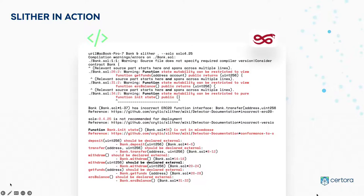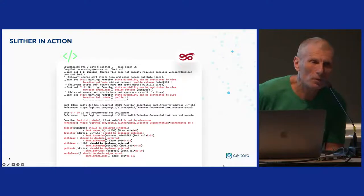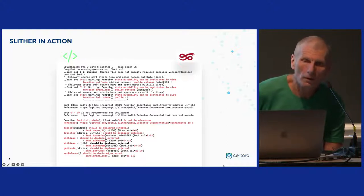Here is the output of Slither on a very simple code — a bank account with deposit and withdraw — that you can find on our website. You can see many red lines indicating vulnerabilities or hazards — potential problems in this code. Do you want to guess how many of them are real? Unfortunately, none of them are real.